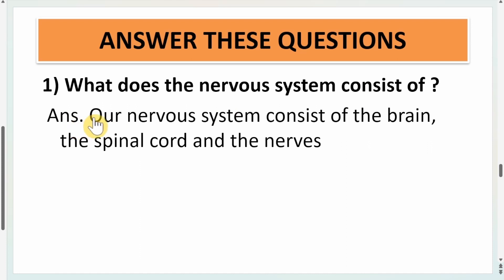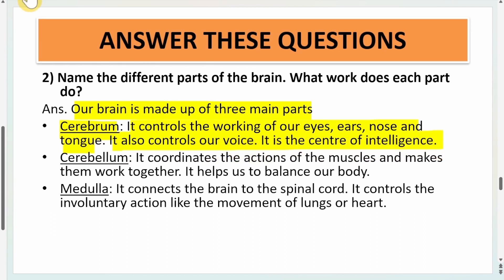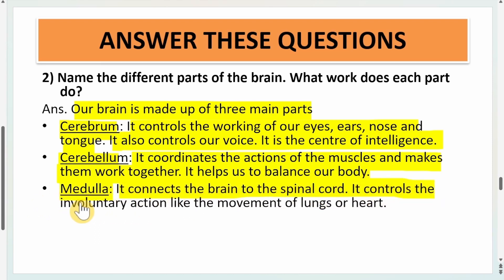Answer these questions. First: what does the nervous system consist of? Our nervous system consists of the brain, the spinal cord, and the nerves. Second: name the different parts of the brain and what work does each part do? The brain has three main parts. First, the cerebrum — it controls the working of our eyes, ears, nose, and tongue; it also controls our voice and is the center of intelligence. Second, the cerebellum — it coordinates the action of the muscles, makes them work together, and helps us balance our body. Third, the medulla — it connects the brain to the spinal cord and controls involuntary actions like the movement of the lungs or heart.